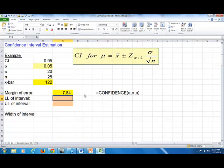That's your margin of error. In other words, z multiplied by the standard error right here. So we have to manually calculate the lower limit and the upper limit of the interval. For lower limit, it's going to be equal to x bar minus the margin of error. And for the upper limit, it's going to be x bar plus the margin of error. And that's it.